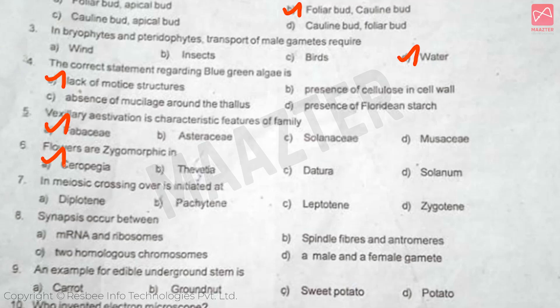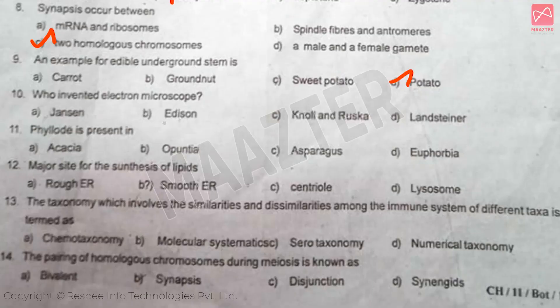In meiosis, crossing over is initiated at — Answer is option B. Synapsis is aquabitivine — Answer is option C. An example for edible underground stem is — Answer is option D. Who invented the electron microscope — Answer is option C.